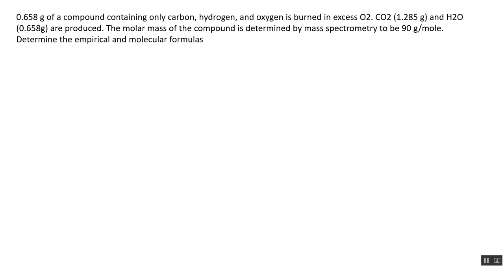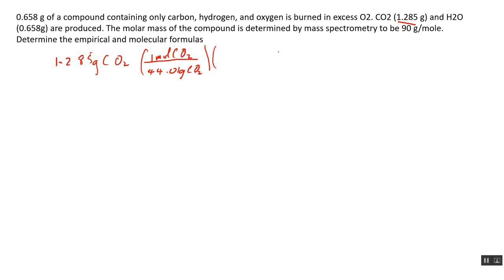The first step is to take the mass of carbon dioxide — that's 1.285 grams of CO₂ — and convert that to moles. To do that, we multiply by the conversion factor: one mole of CO₂ over 44.01 grams of CO₂. The next step uses the mole ratio between CO₂ and carbon: one mole of CO₂ contains one mole of carbon.